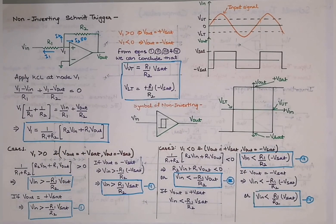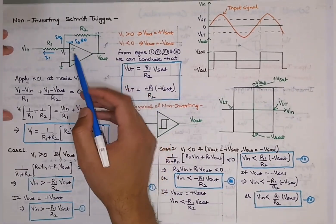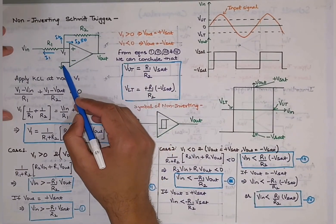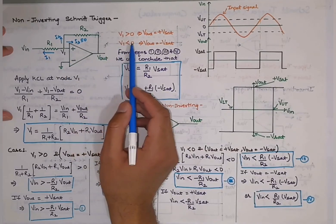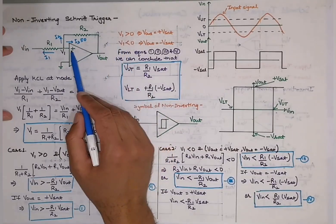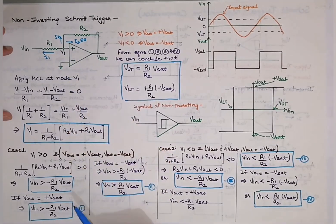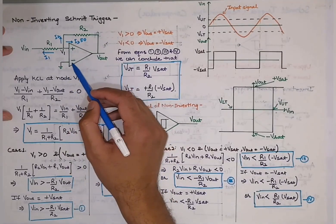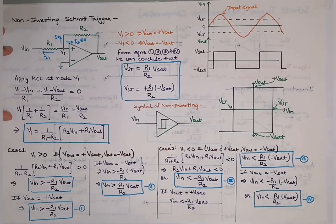From this diagram, if V1 is greater than 0 — since the inverting terminal is connected to ground — the output voltage will be +Vsat, because the non-inverting terminal voltage is greater than the inverting terminal. Similarly, if V1 is less than 0, the output voltage will be −Vsat. Let's discuss these two cases one by one.